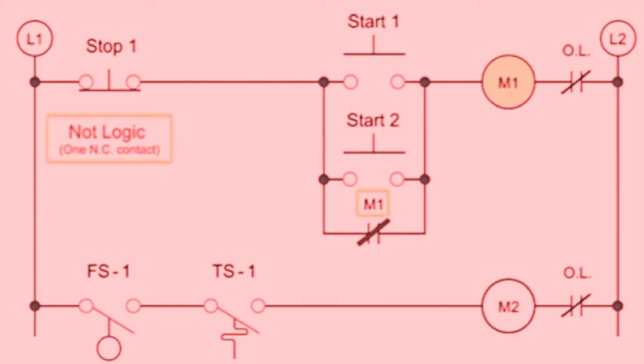Thus, when the normally closed switch, stop 1, operated by a manual push button, is pressed, the M1 coil is shut off, and the M1 holding contact is deactivated.